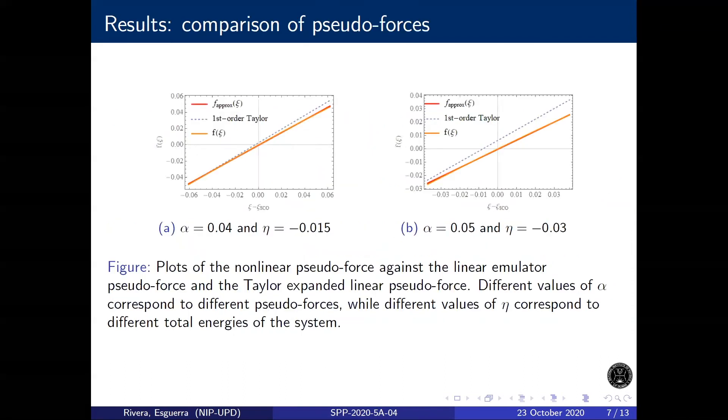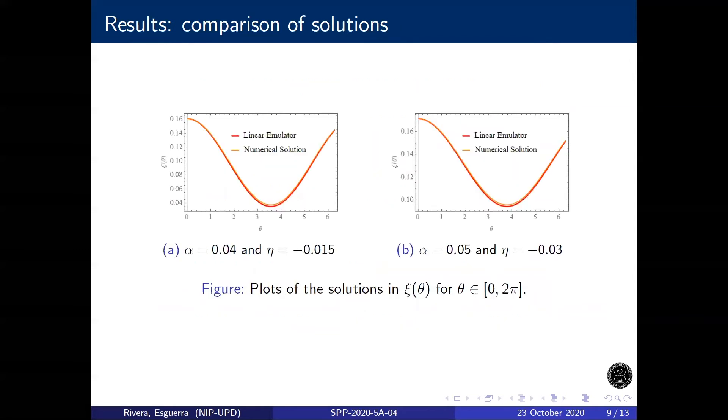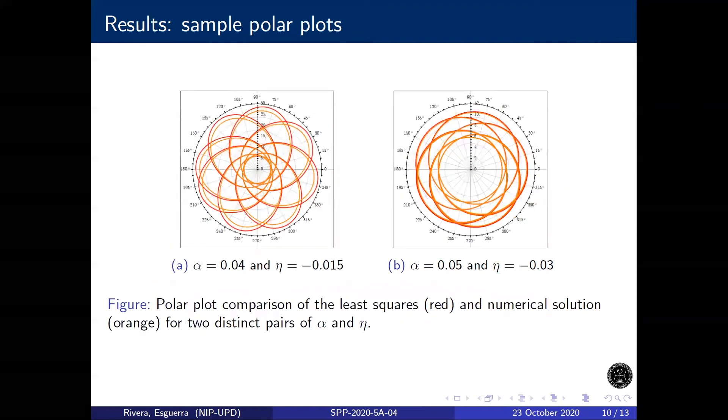In comparing the pseudo-forces, we see that the linear emulator provided better approximation to the pseudo-force than the first-order Taylor series. We quantify this comparison by calculating the precession angle of the three solutions. We also showed the plots of the inverse radius versus the azimuthal angle, as well as the polar plots.